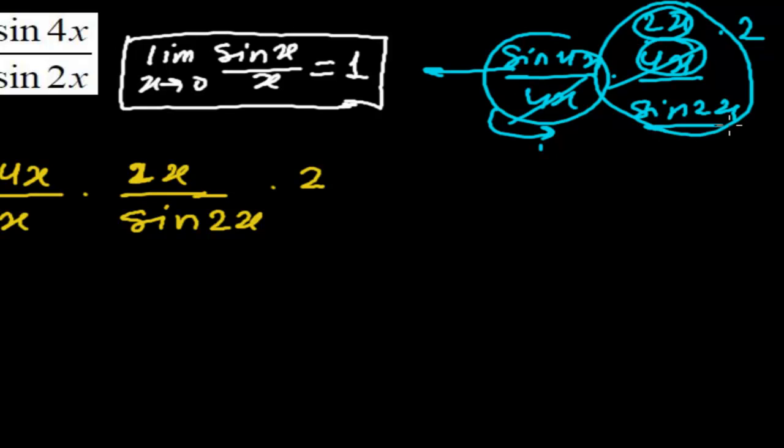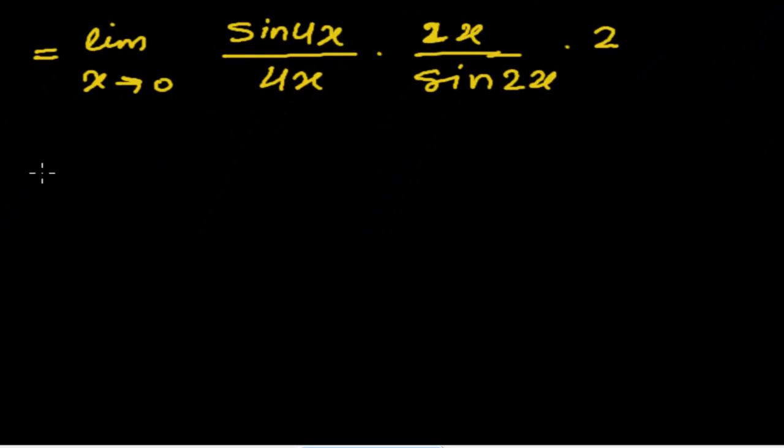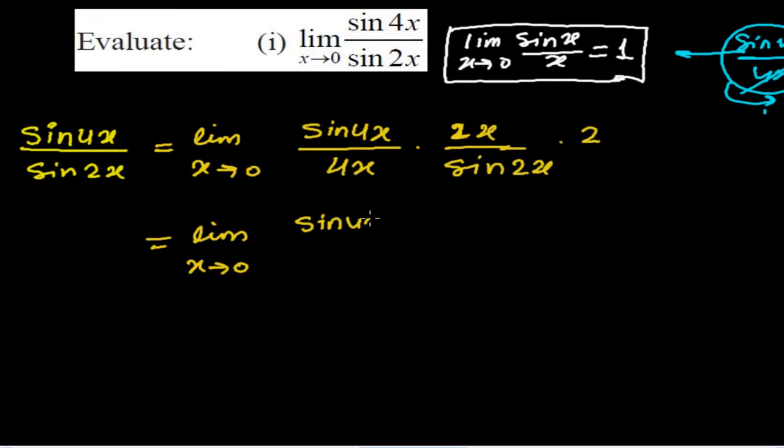And again, here is sin 2x. So what I did exactly: I split this 4x into 2x times 2. Now I got sin 4x upon 4x in this form and sin 2x upon 2x in this form. This 2x we can write downstairs, that I am going to do in the next step.